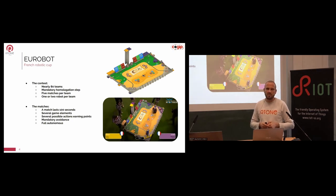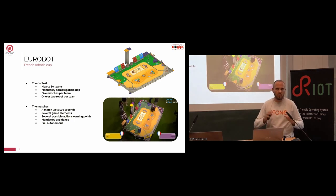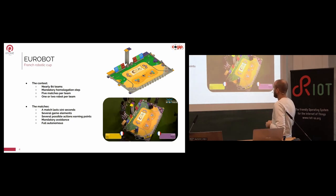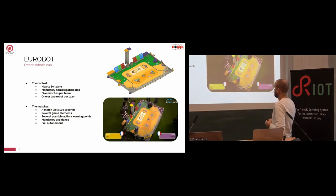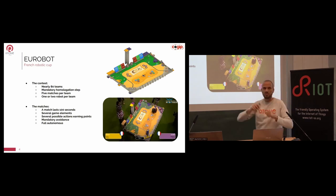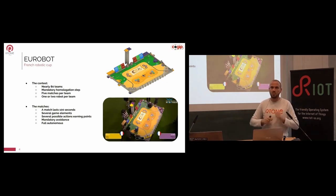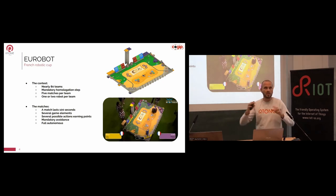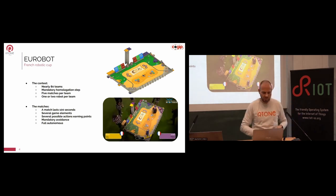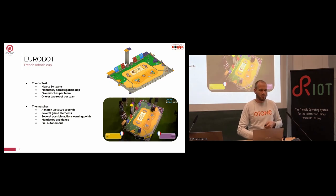Once the robot is homologated, you go through five matches of 100 seconds. The robot must be totally autonomous. You can see in the animated picture the robot at the top — it's at the beginning of the match, grabbing a statue. There are elements you have to grab, and of course there are actuators. For these actuators and sensors we need drivers, and we developed some of them for our firmware which can also be contributed to RIOT.